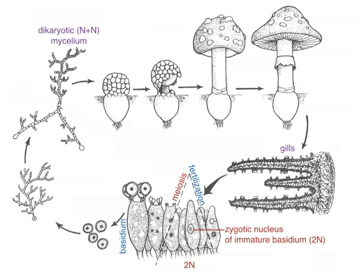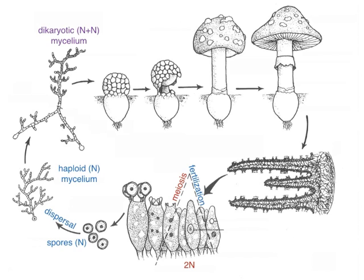Those haploid spores then disperse, and if they land in a nice place that's appropriate for that species, then they'll germinate and grow into a haploid mycelium — a filamentous hyphae that is ramifying throughout the substrate.